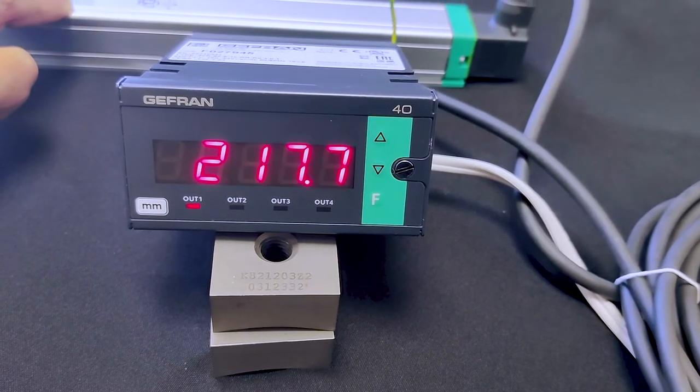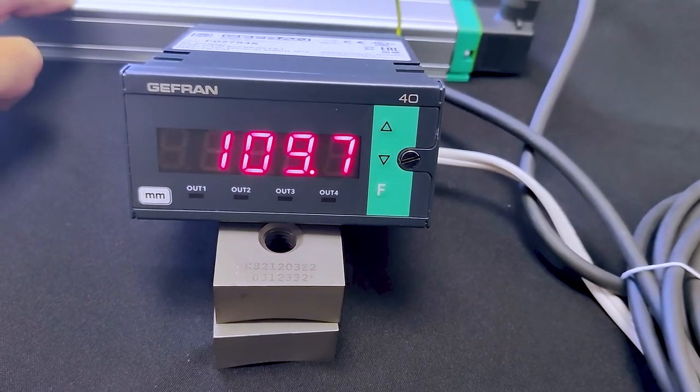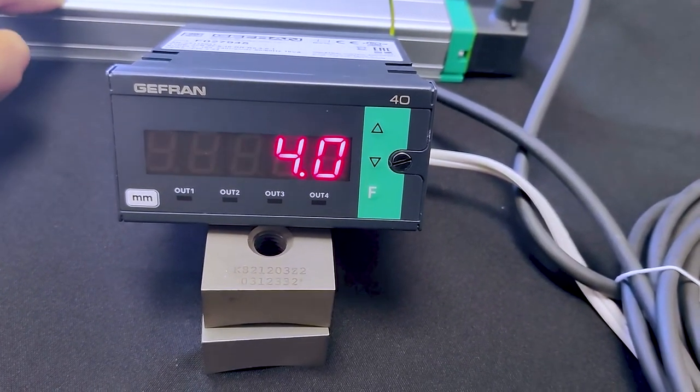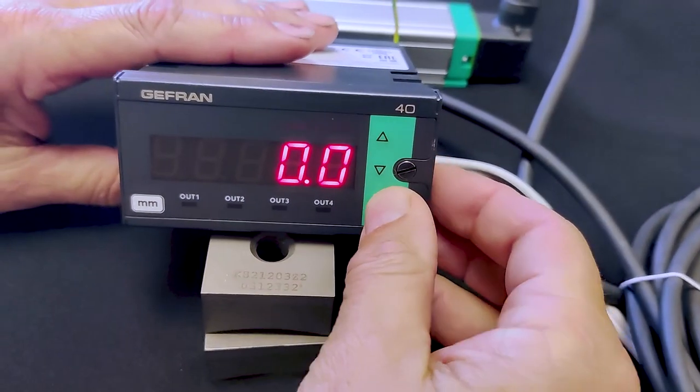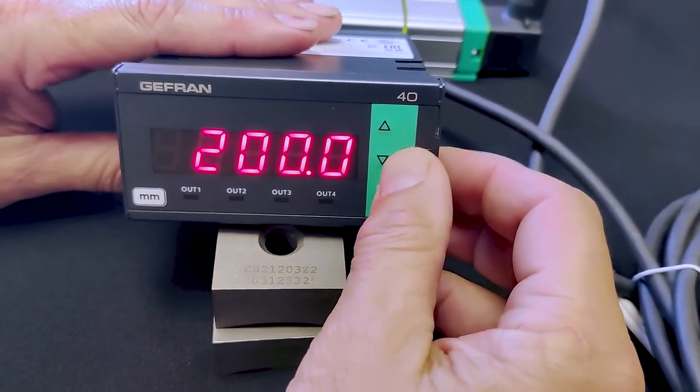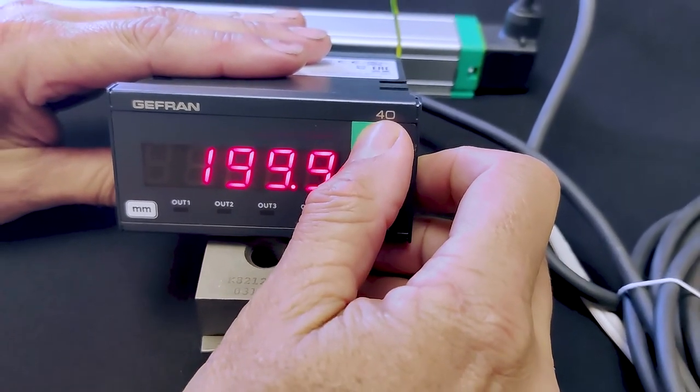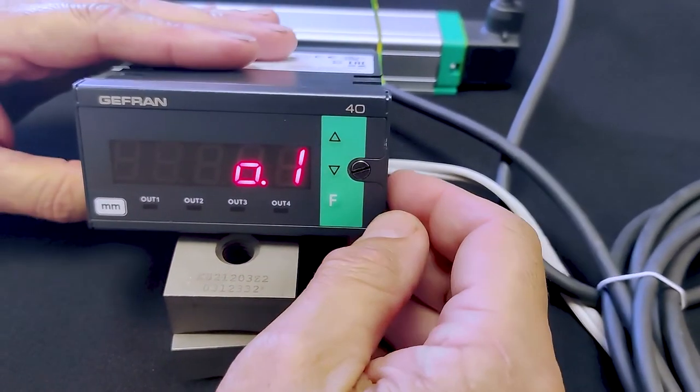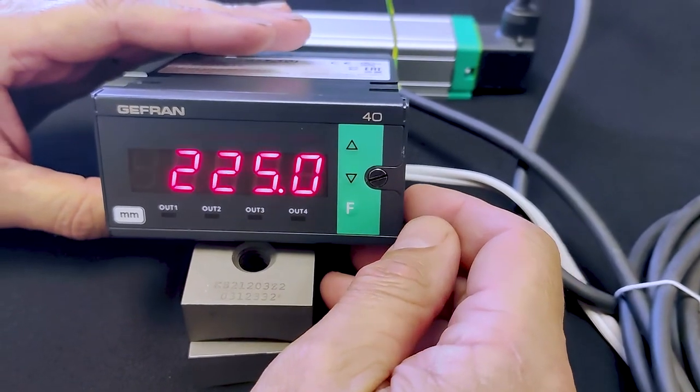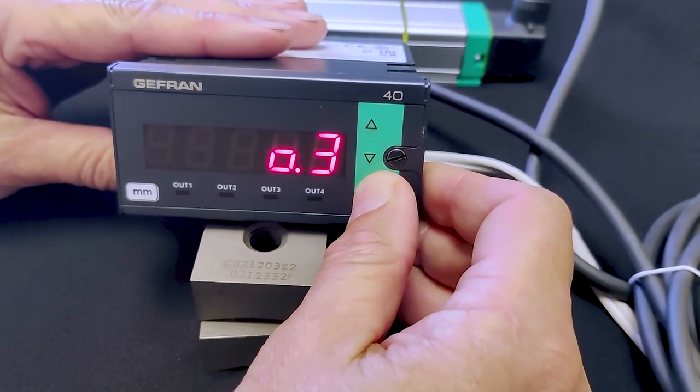They're non-latching, so as you go back they simply open back up. And those values can be changed again here at 01. You can change them to anything you want. So again, at a certain point if you want another light, an audible alarm, anything to come on, you can utilize those relays to do that.